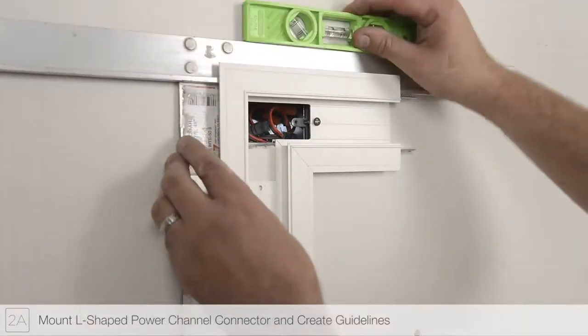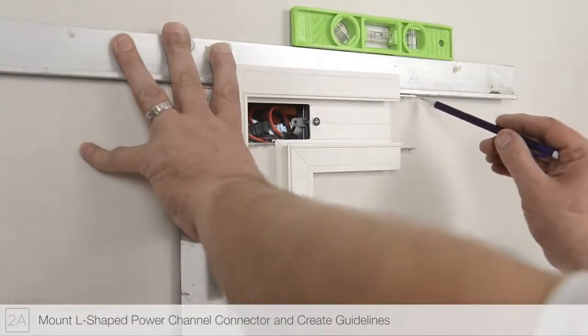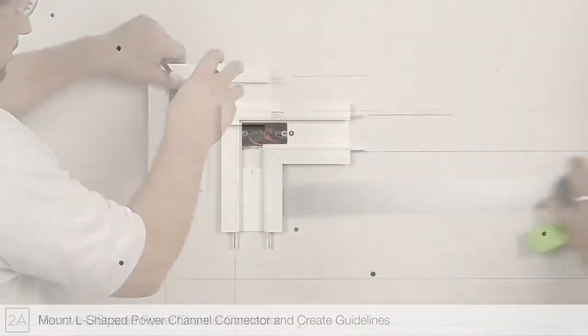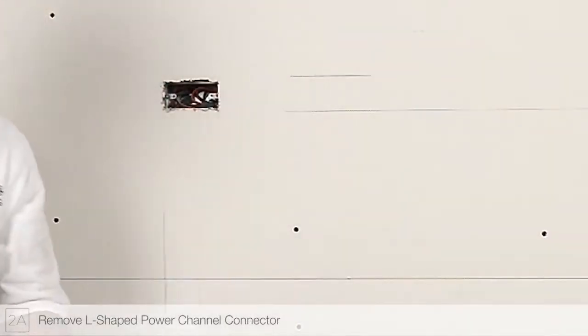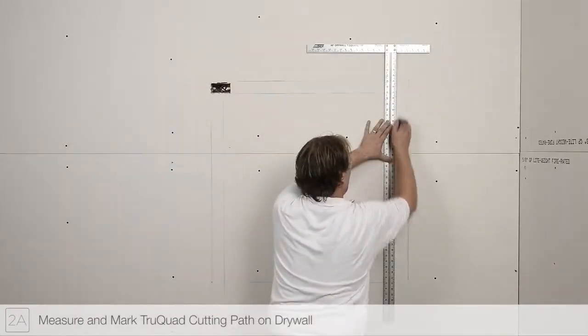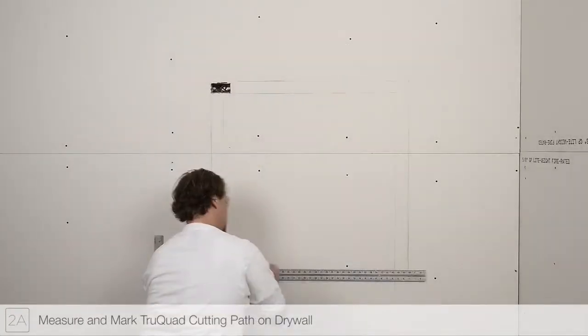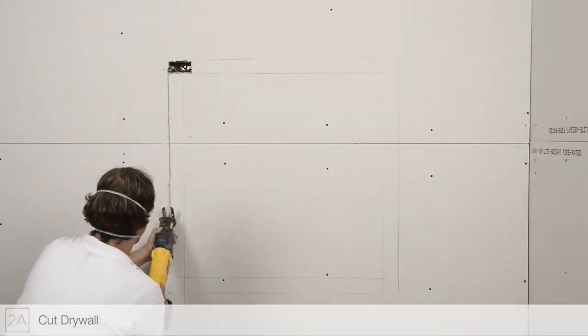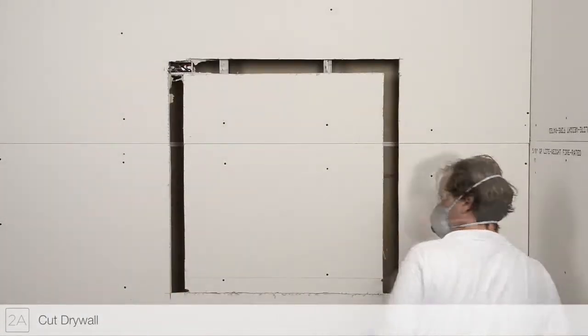Ensure the power connector is level before marking. Use the channel width behind the mounting flange to mark the drywall. Using the marked channel width, mark the true quad cutting path on the drywall. Cut the drywall using a jab saw or other appropriate tool.